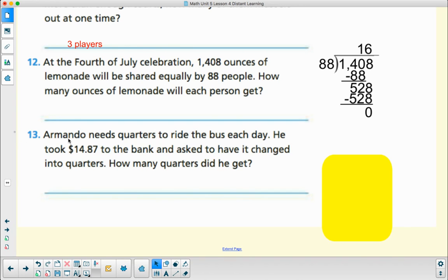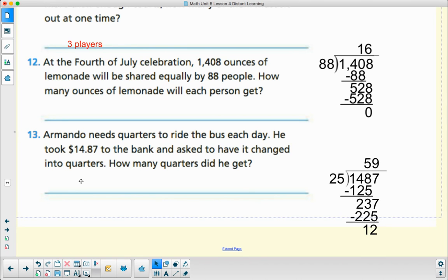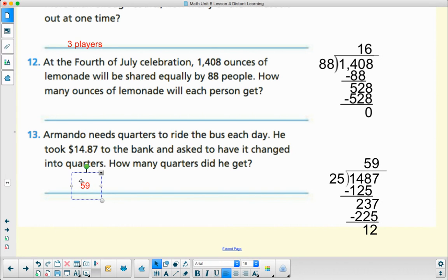Last one of these. Armando needs quarters to ride the bus each day. He took $14.87 to the bank and asked to have it changed into quarters. How many quarters did he get? $14.87 put into quarters. Quarters are $0.25. He had some dollars. Those dollars are going to get put into cents, so I changed them all into cents first by multiplying by 100. $14.87 is 1,487 cents divided by 25 cents. So he ends up getting 59 groups of 25, or 59 quarters, but he has 12 left. The remainder 12 represents 12 cents. 12 cents aren't enough to get any more quarters, so I can ignore the 12 cents and just say he gets 59 quarters.